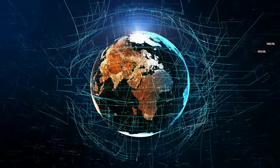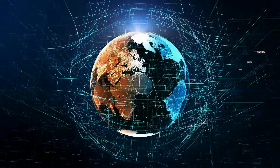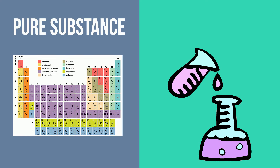Matter found on Earth can be classified as either a pure substance or a mixture. Let's take a look at the difference between these two.